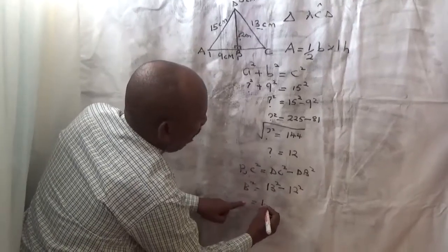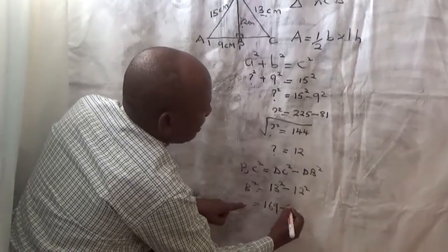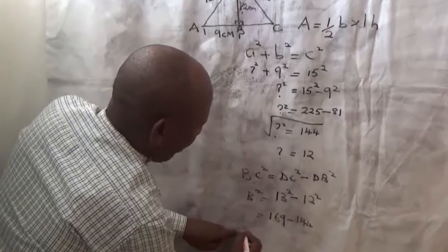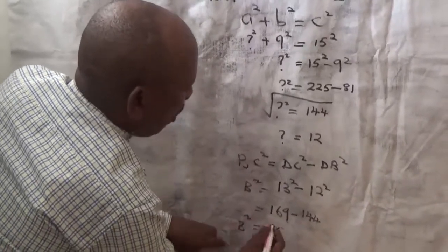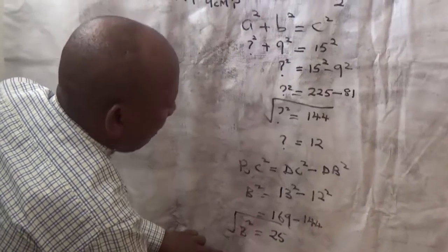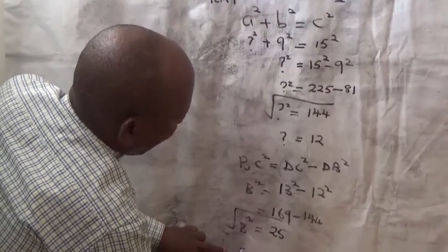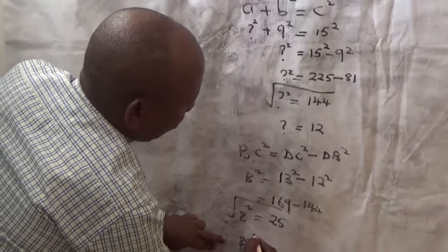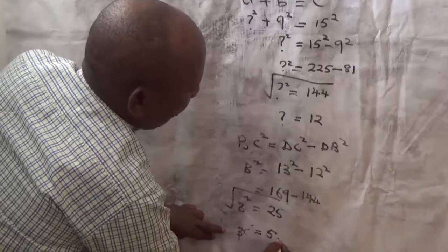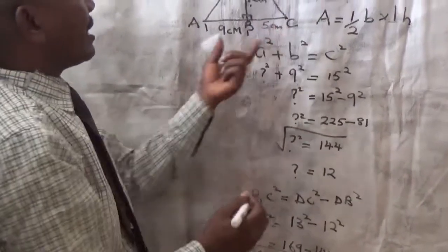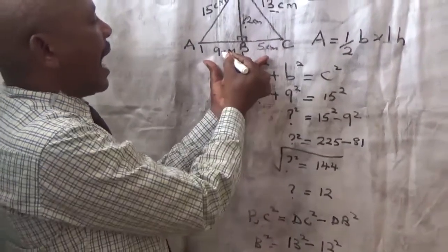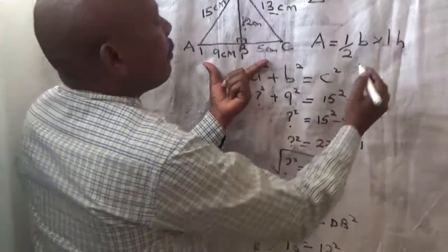So, here we have 169 less 144. Therefore, BC squared is equal to 25. When you find the square root of that, our BC shall equal to 5 centimeters. Now, we have got this time 5 centimeters, which gives us now our base 9 plus 5, which is 14.